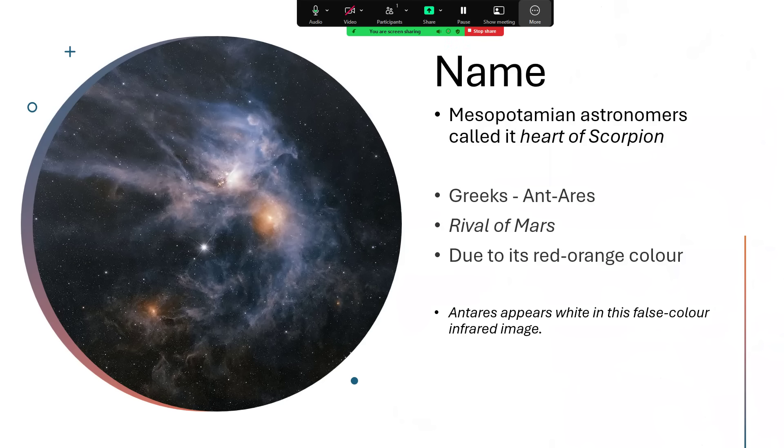It does look just like Mars looks in the sky when you observe it with the naked eye. Now, this photograph of it is in fact in false color. It's an infrared image showing it as white. So that's rather a different view of it. But picking up all of that lovely nebulosity, all those clouds of gas that are around it, of which more later.